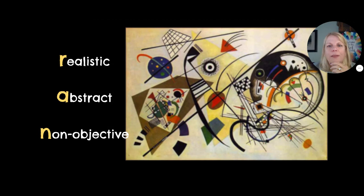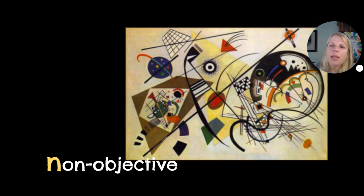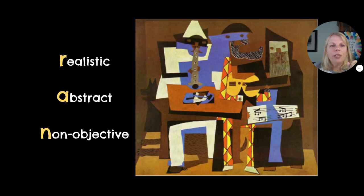Realistic, abstract, non-objective — which category? Yep, non-objective. Again, shapes don't mean it's an object. Squares, circles, triangles — those aren't objects, they're shapes. That's the difference.